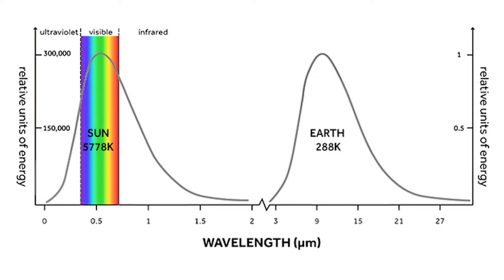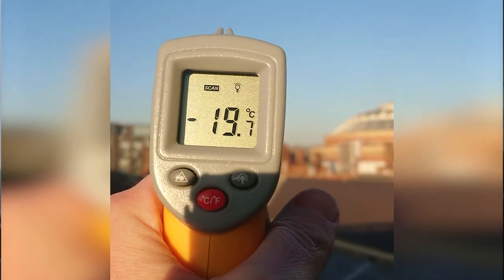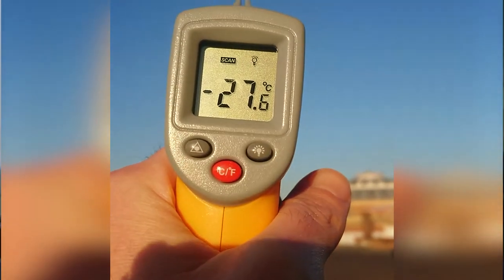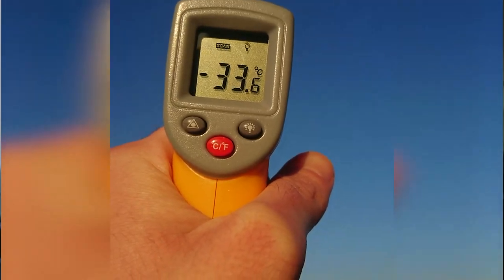So the Sun emits electromagnetic radiation at much shorter wavelengths than the Earth does. By detecting the range of radiation coming from a body, an infrared thermometer or camera can calculate the temperature of the body without actually touching it. It's also worth noting that objects can be reflecting radiation that's come from elsewhere at the same time as emitting their own radiation.